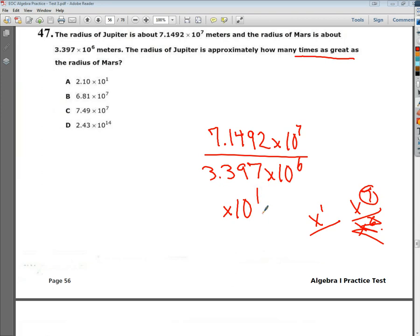On the other side of it, I would just do the 7.1492 divided by 3.397. And you end up with like 2.104-ish. So A is the correct answer to this one.